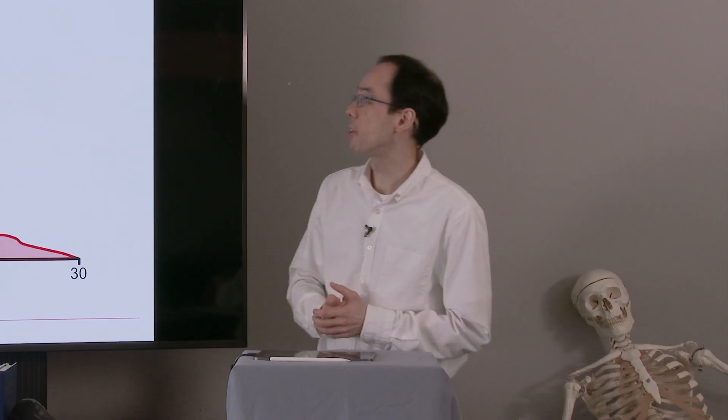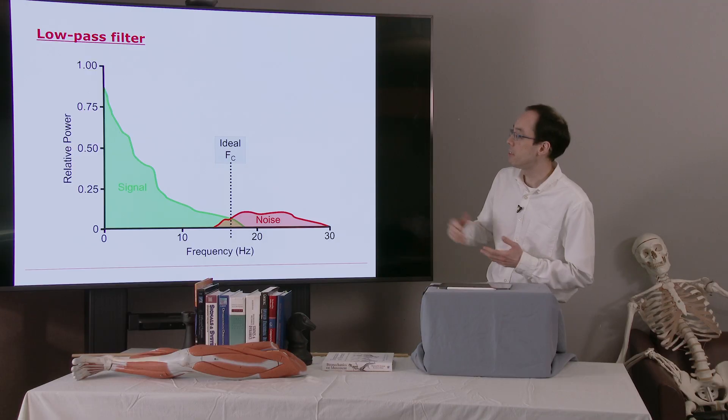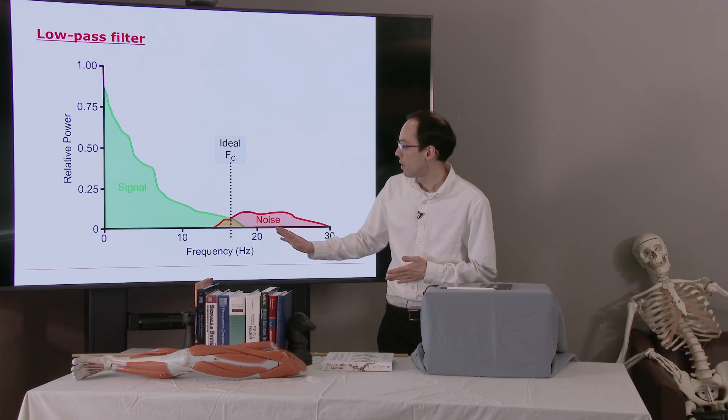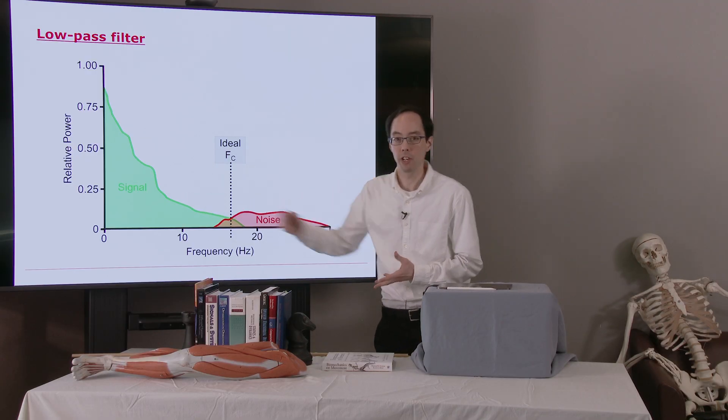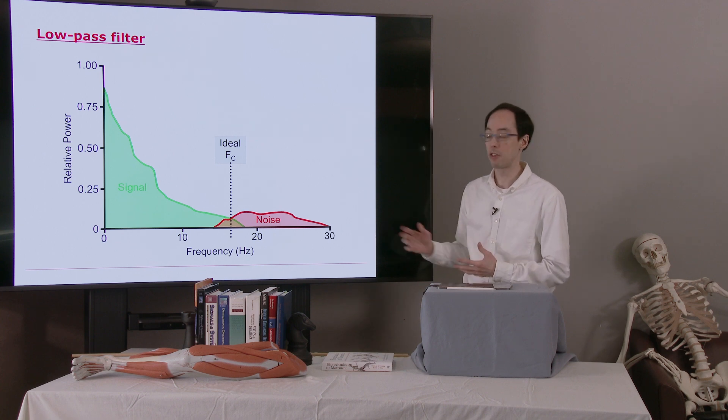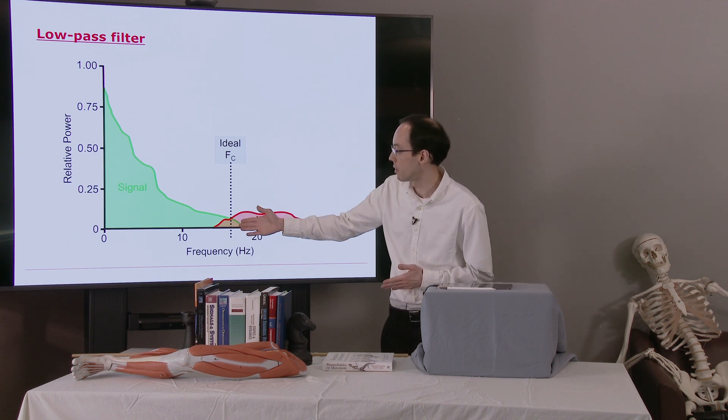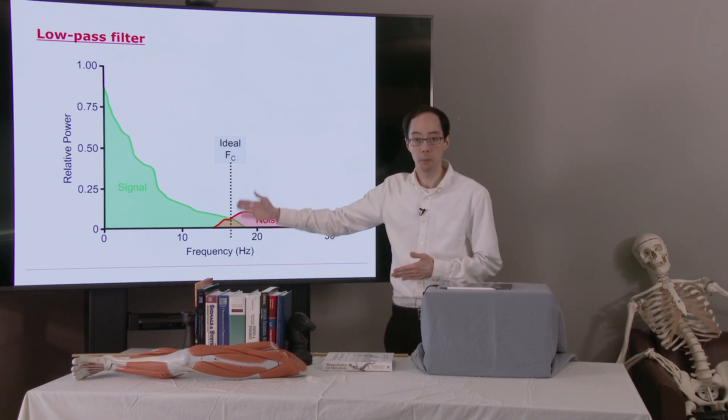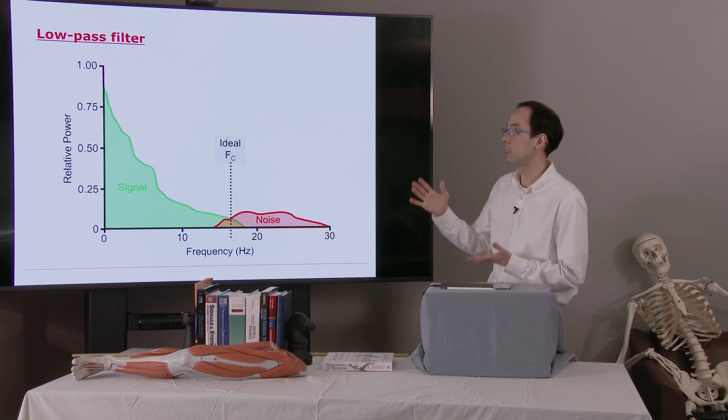How do we choose our cutoff frequency? Ideally, we'll have signal that's in one frequency range and noise that's in another frequency range. So ideally, we can find the best of both worlds and put our filter cutoff frequency in between the signal and the noise.